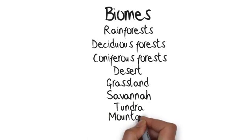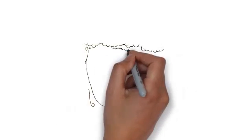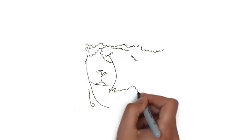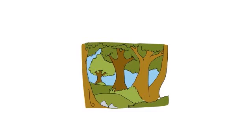Biomes are defined by abiotic factors, which are the non-living elements of an ecosystem. These include climate, landscape, soils and plant life.